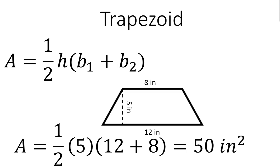Using order of operations, I do 12 plus 8 first, which equals 20. Then I multiply that by 5, which is 100, and divide by 2, giving 50 inches squared.